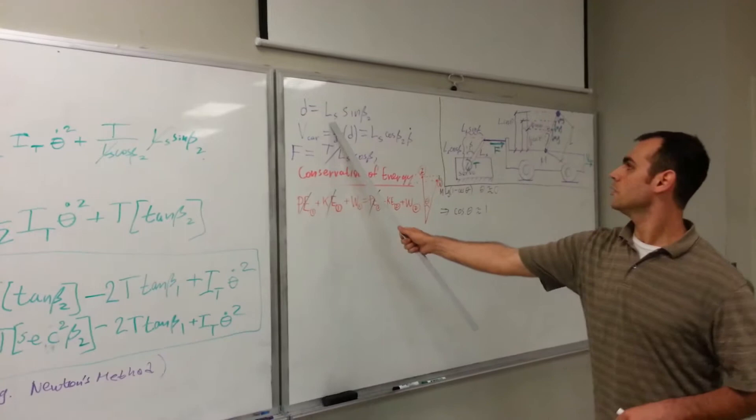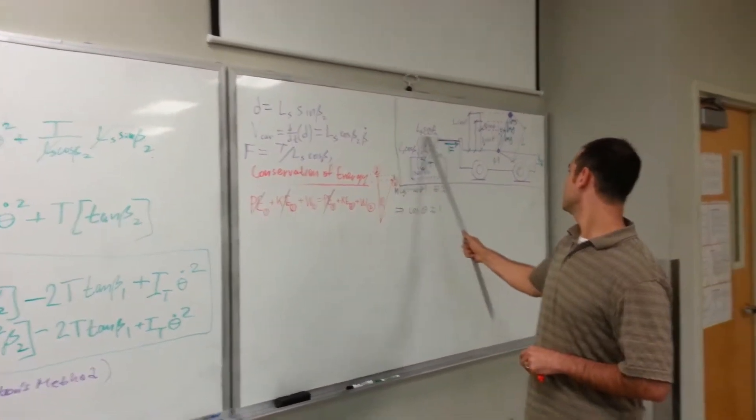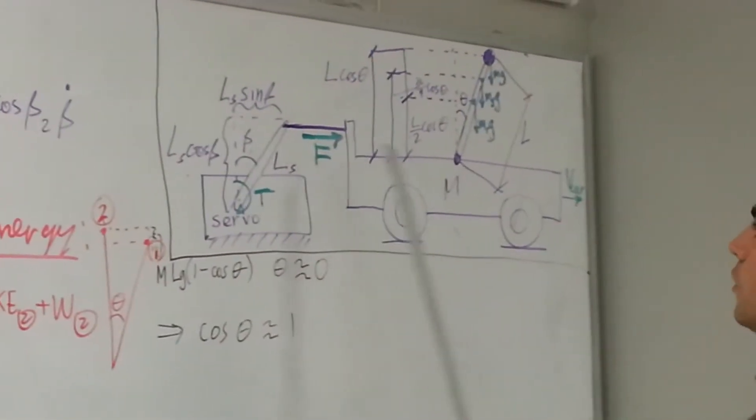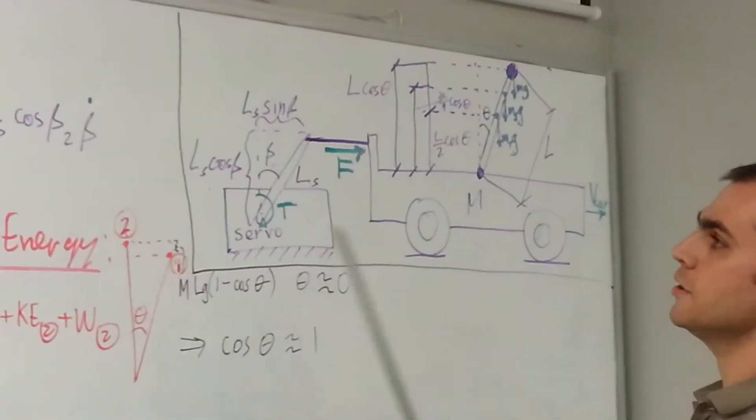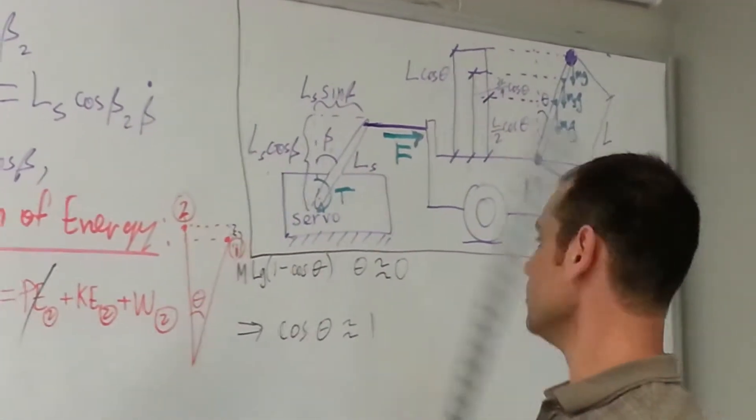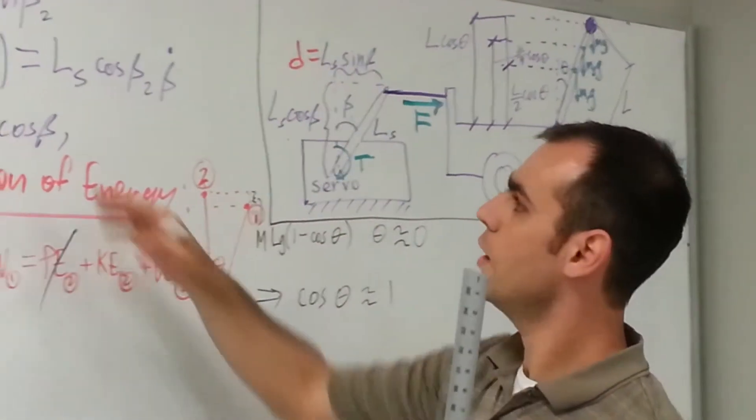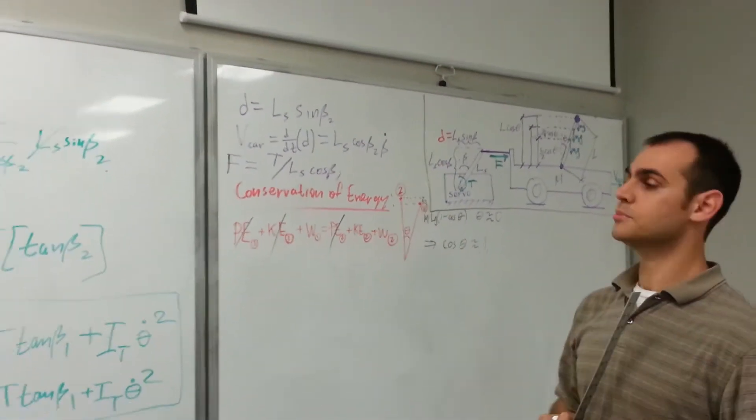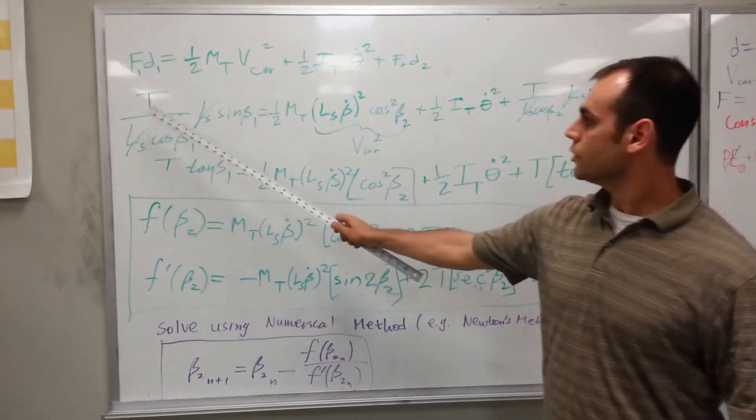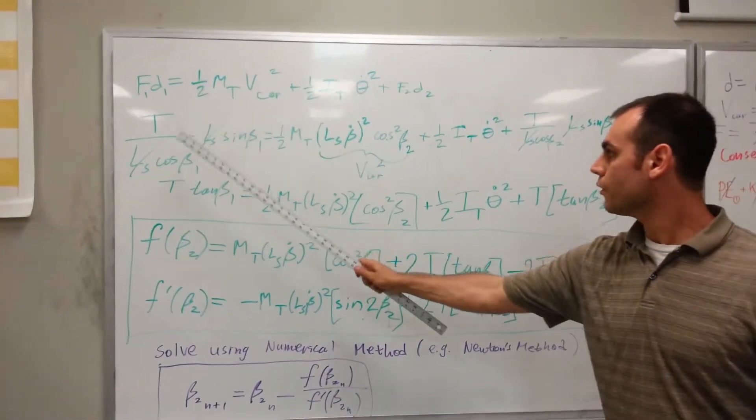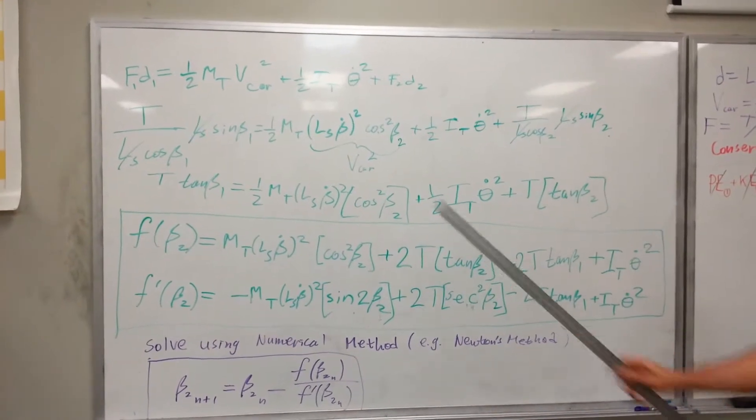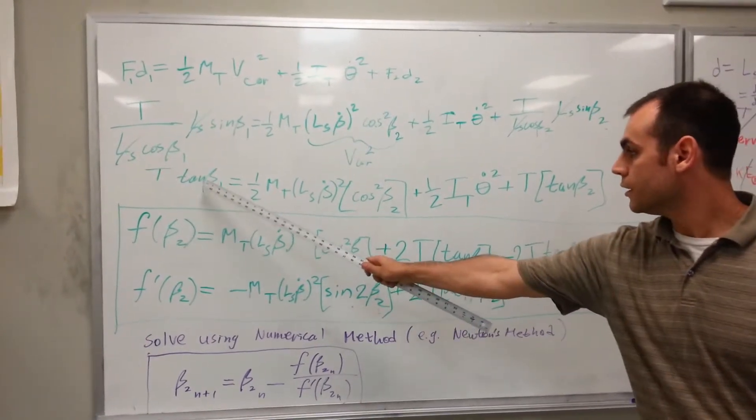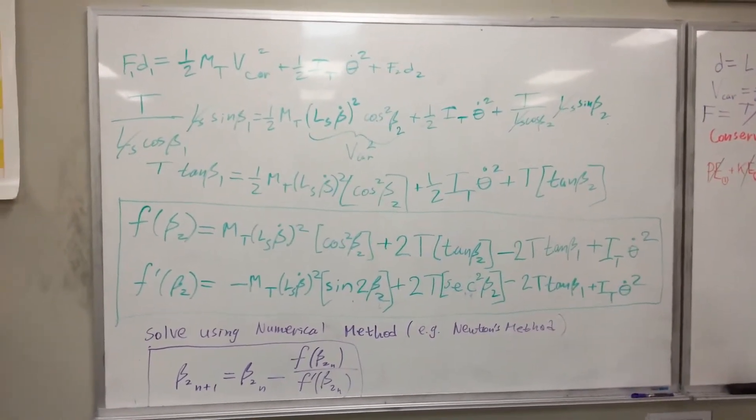And displacement is equal to L sub S times sine of beta, which is this here. Also note that the velocity of the car can be found by this displacement by simply taking the derivative of this distance here. And this is distance. So when you take the derivative of the distance, you get this term. So now, we have all the terms necessary to make our substitutions. So here is this equation rewritten with all of the appropriate substitutions. And after simplifying many of the terms, we come down with this equation here.